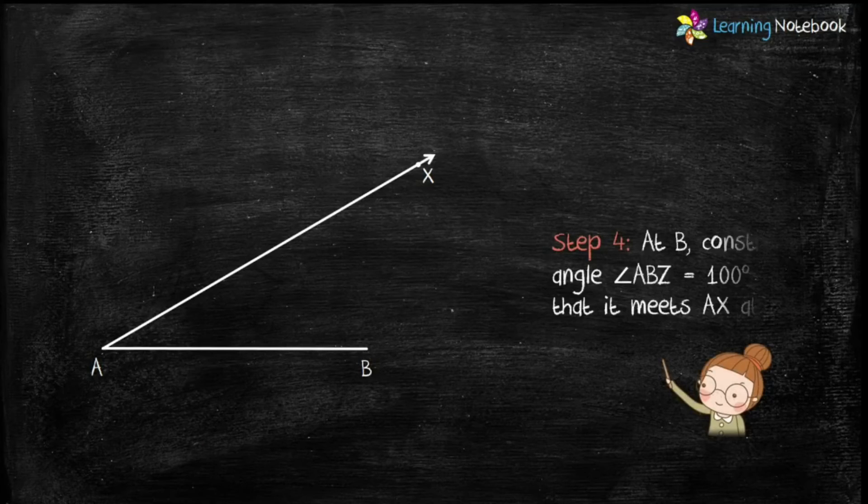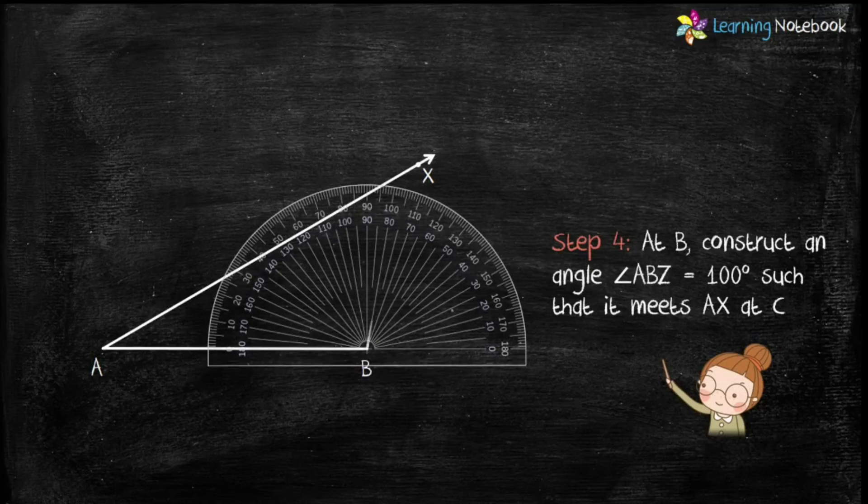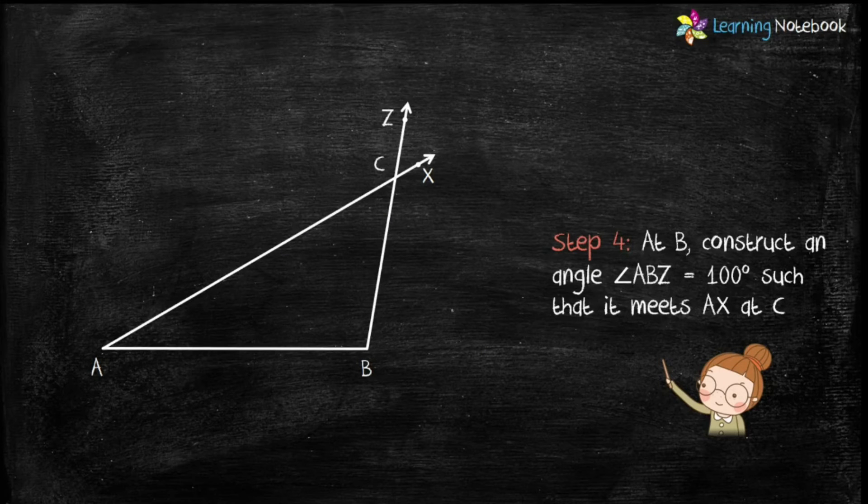In step 4, at B, construct an angle ABZ equals to 100 degree such that it meets AX at point C.